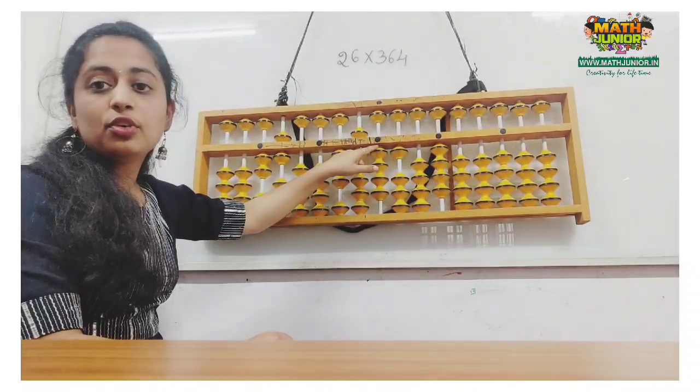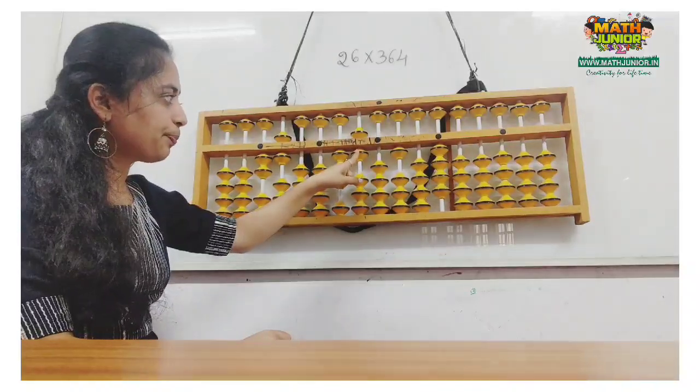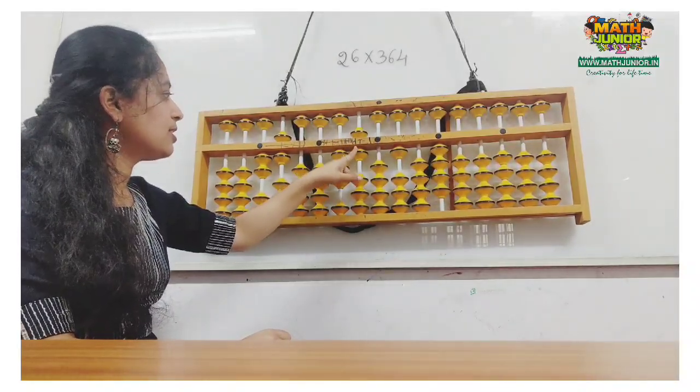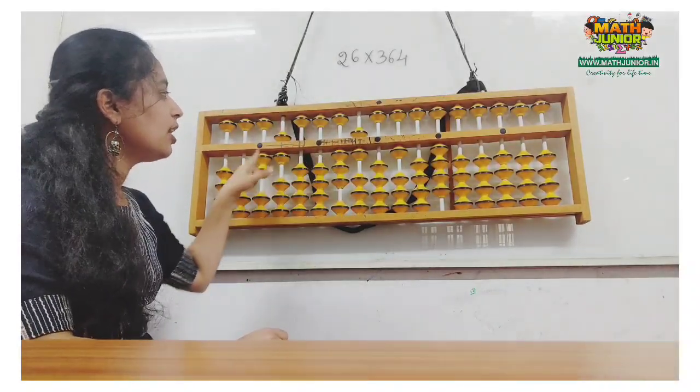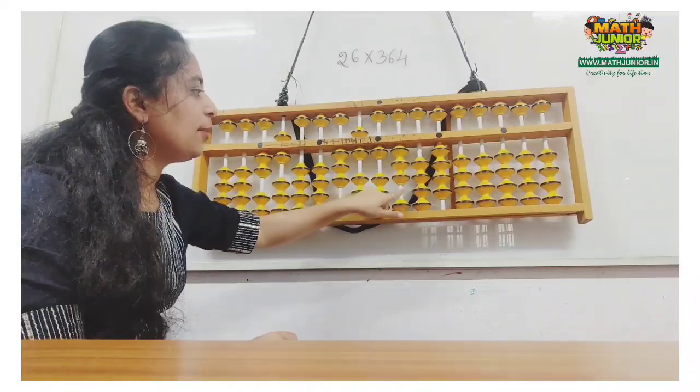The work with 4 is done. I remove 4 from here. Next, you have to multiply 6 with the 2. 6 twos are 12. Place 12 directly and put the finger here.